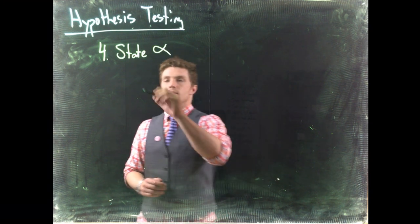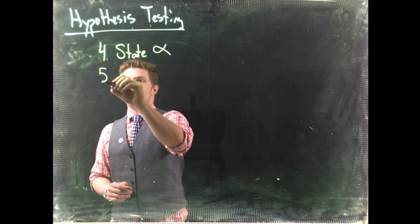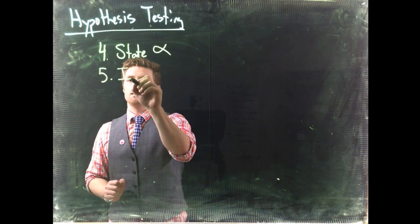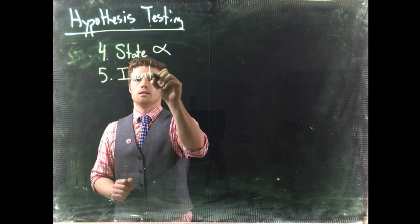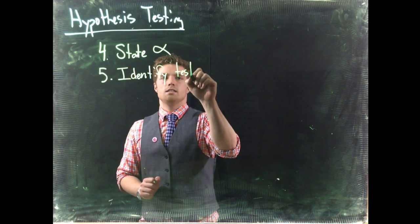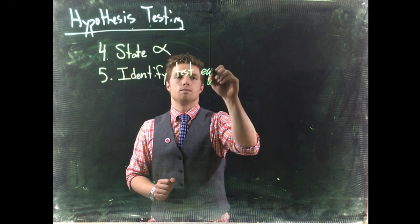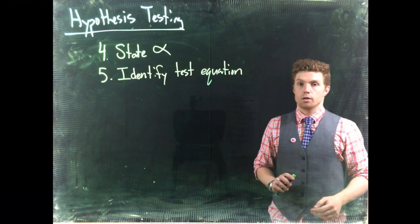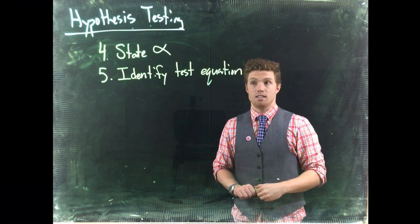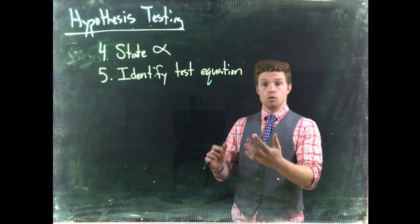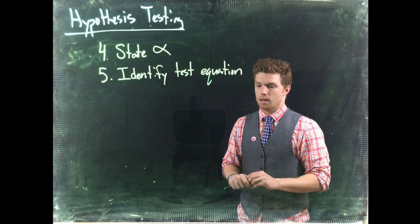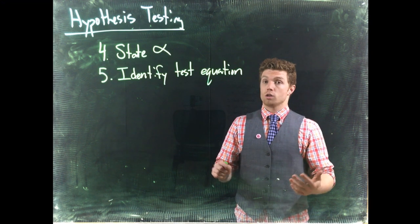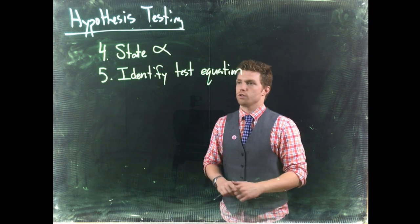Number five: identify the test equation. We need to figure out what equation we're actually going to use to calculate our test statistic. We've been using these already when we looked at one-sample means and one-sample proportions. I'll show these further when we're in our software.